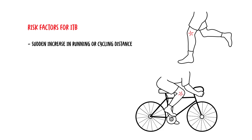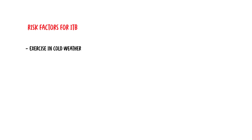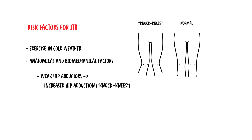Risk factors for ITB syndrome include sudden increase in running or cycling distance, high weekly running mileage, excessively long strides causing increased hip flexion and increased strain at the lateral knee, incorrect pedal position when cycling, exercising during cold weather, and anatomical and biomechanical factors including weak hip abductors leading to increased hip adduction, knocked knees, and increased internal rotation at the knee, thought to cause strain at the ITB.